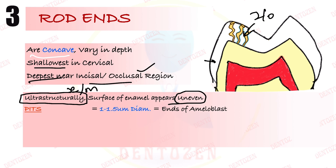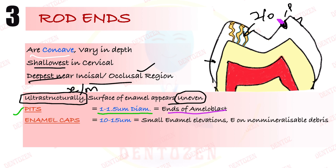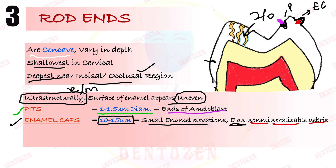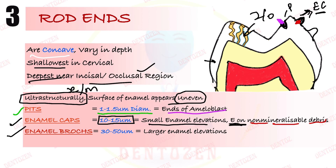Ultrastructurally, three things can be seen on the enamel surface. First, pits — depressions about 1 to 1.5 micrometers in diameter, representing the ends of ameloblast cells. Second, elevations known as enamel caps, about 10 to 15 micrometers — these form when non-mineralized debris on the surface has enamel deposited over it, creating a small elevation. Third, if these elevations are larger — about 30 to 50 micrometers — they are known as enamel brocks. So the three ultrastructural features on the enamel surface are pits, enamel caps, and enamel brocks.